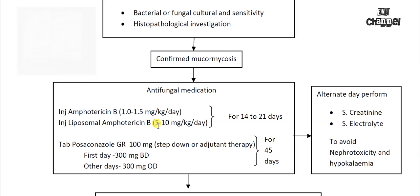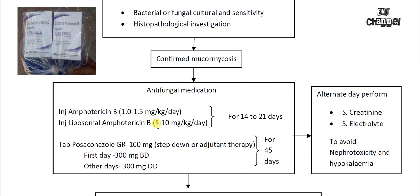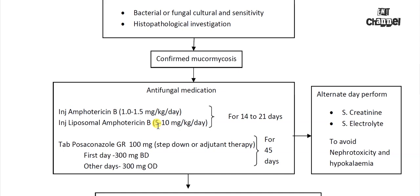Amphotericin is available in two forms: routine amphotericin B and liposomal amphotericin, which has less general toxicity. The dose is mentioned on the screen, and it is given for two to three weeks. If you have done very good surgery, even one week of amphotericin may be sufficient. As a step-down treatment, especially during discharge, the patient is put on posaconazole in tablet form — 300 mg twice daily on the first day, then 300 mg once daily.